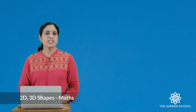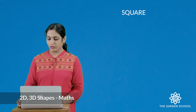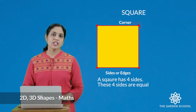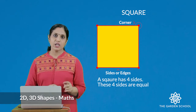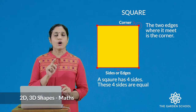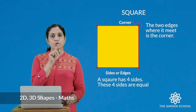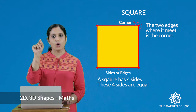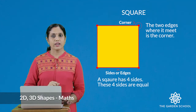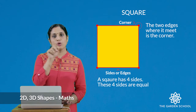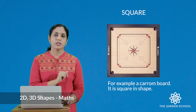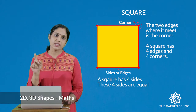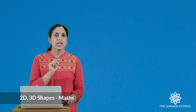First one: square. As you know, in a square there are four sides. These four sides are equal sides, or you can call them edges. The two edges where they meet is the corner. So in a square there are four edges and four corners. For example, a carom board is square in shape. Square has four edges and four corners.